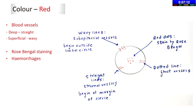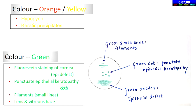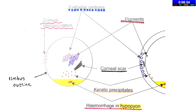Rose staining is not frequently given in exams but can be asked; hemorrhages are not very common to see. Orange is for hypopyon and fresh KPs. You rarely get a case with active hypopyon — you might see it in the other eye. Green is for fluorescein staining: any epithelial defect. Green dots are punctate keratopathy, small lines are filaments, and shaded areas are epithelial defects.